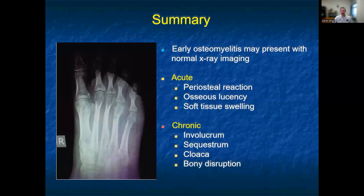In summary, early osteomyelitis may present with normal x-ray imaging in up to 80% of patients. In acute osteomyelitis, you may see periosteal reaction, osseous lucency, and soft tissue swelling. In chronic osteomyelitis, you may see involucrum, sequestrum, cloaca, and bony disruption.